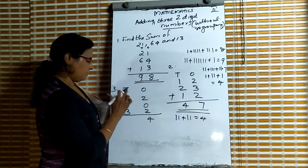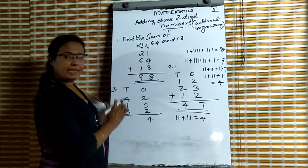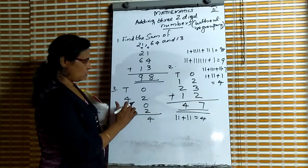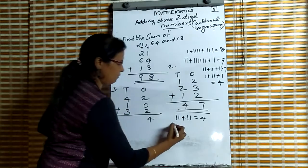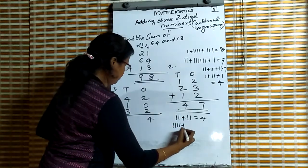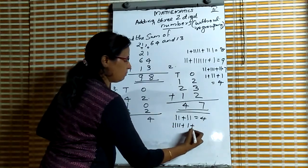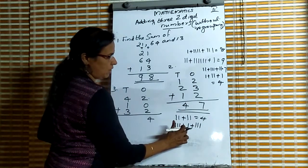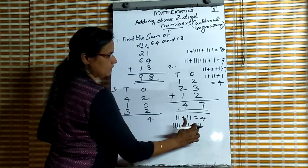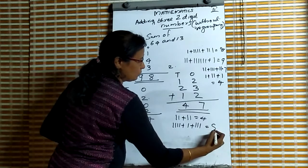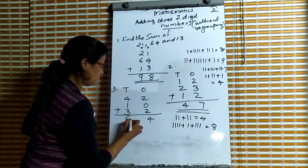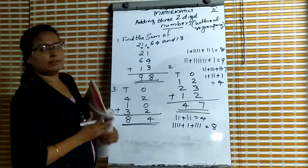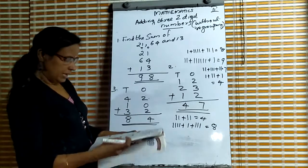Then we add the digits in the tens place: 4, 1, 3. 4 plus 1 plus 3 is equal to 8. So our answer is 84.